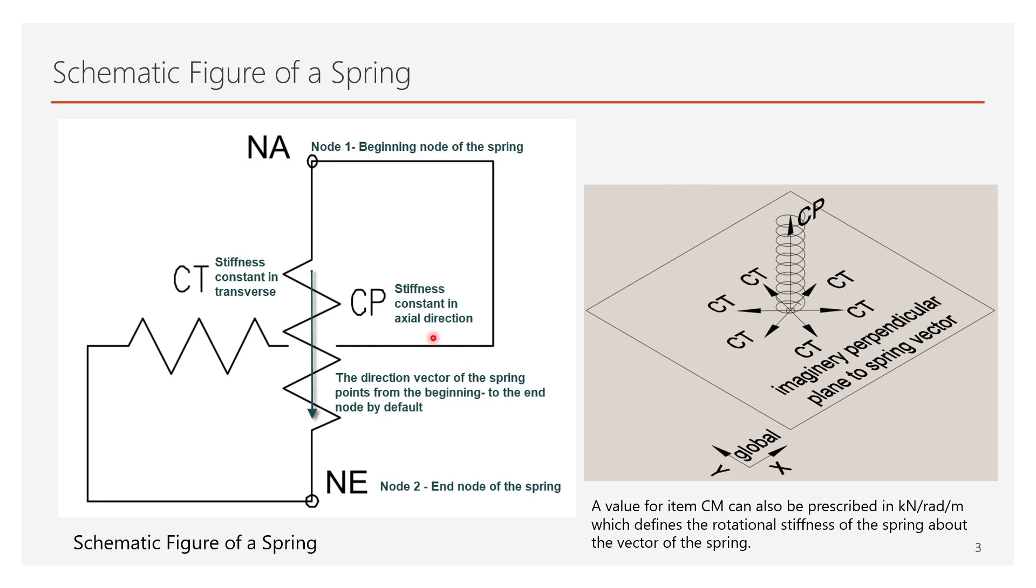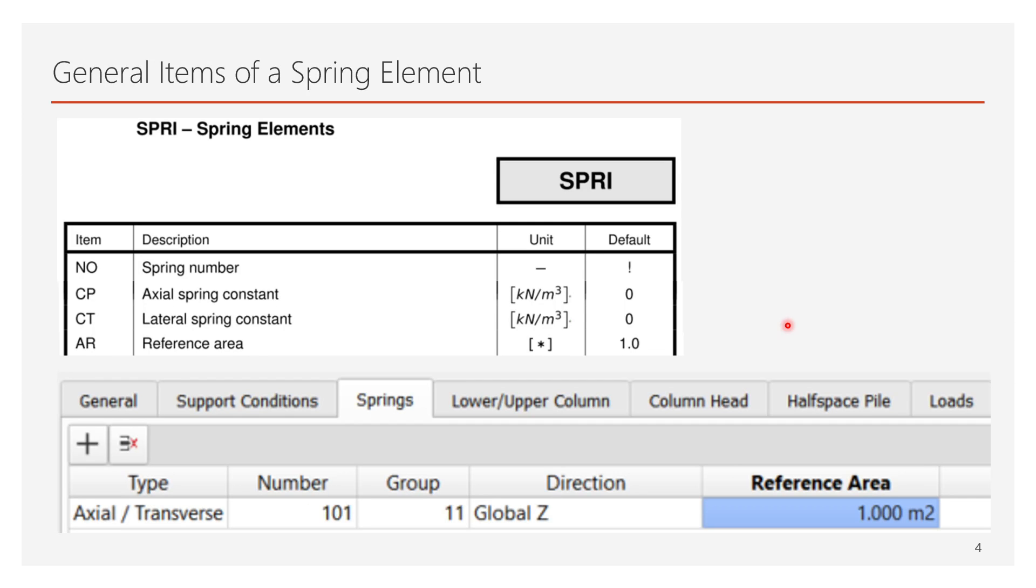As you can see on the current figure, providing a value to Cp, the stiffness constant in the spring direction can be defined. Similarly with the value of Ct, the lateral stiffness constant of the spring can be prescribed in the plane which is perpendicular to the vector of the spring. By default, the Cp and Ct values are entered in kN per cubic meter unit.